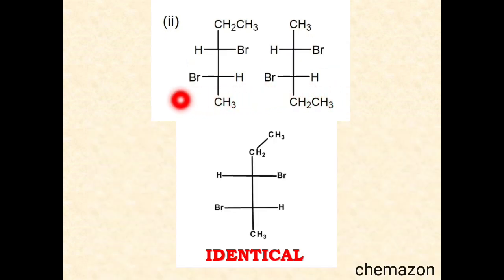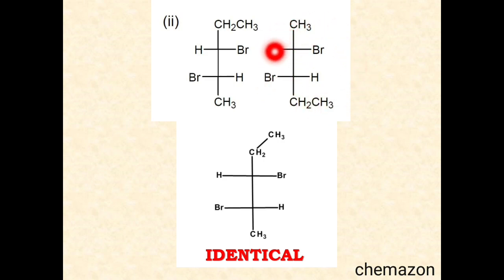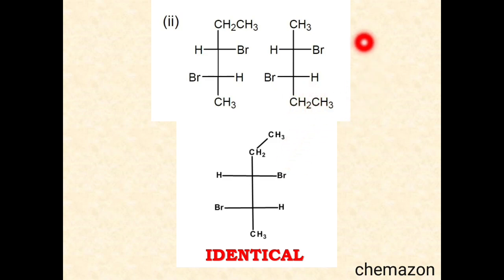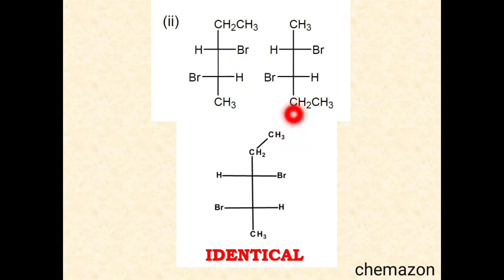In the second set of molecules, when we rotate the second molecule 180 degrees in plane, H comes to the right, Br to the left, and accordingly the other hydrogen comes on the left and bromine on the right, with the ethyl group on top and methyl going down. Comparing the first molecule with this rotated second molecule, both are exactly the same — so these are identical molecules.